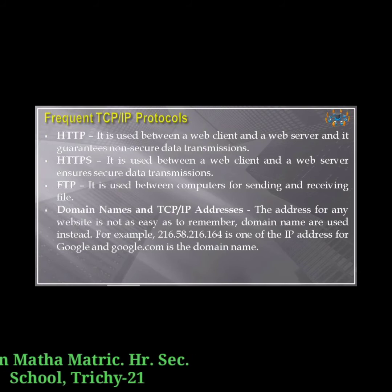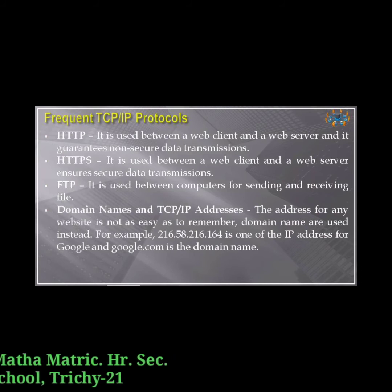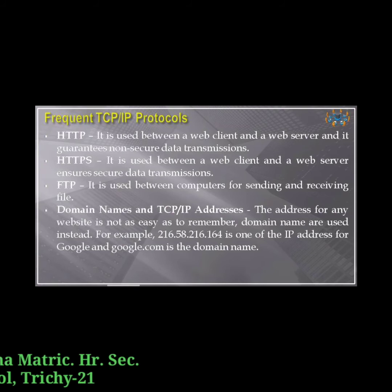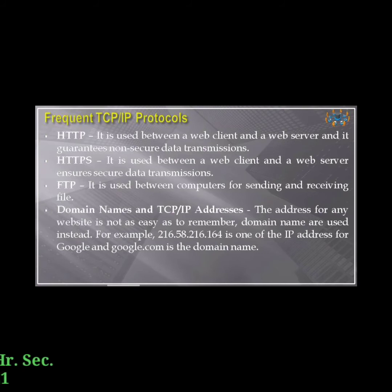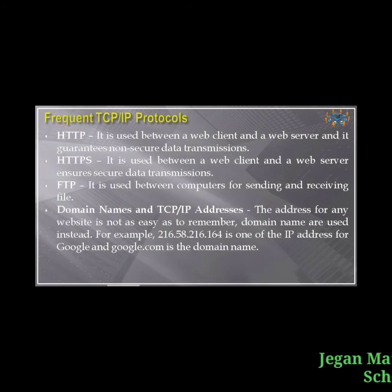Domain names and TCP/IP addresses: the IP address for any website is not easy to remember, so instead we use a domain name. For example, 216.58.216.164 is one of the IP addresses for Google, and google.com is the domain name. By using a domain name, we can identify a website easily, as IP addresses are difficult to remember.